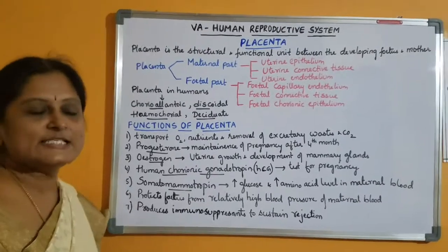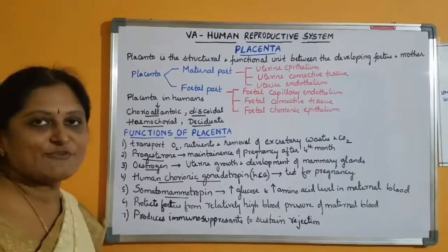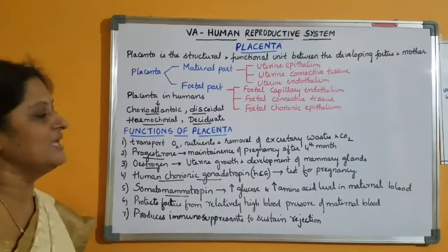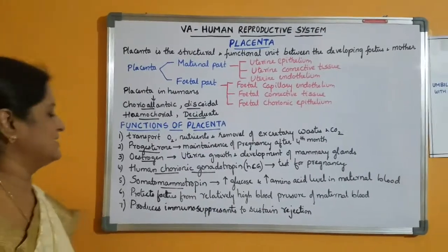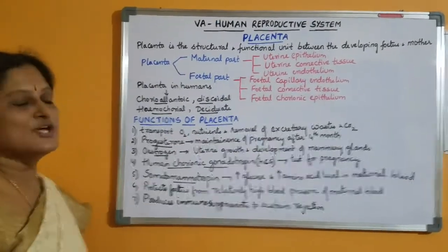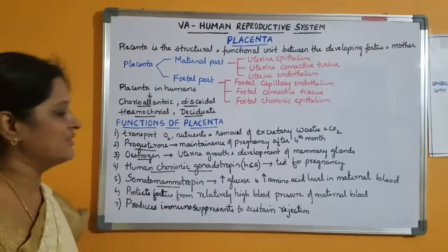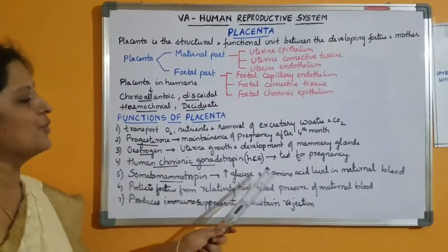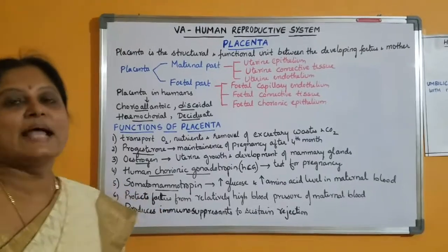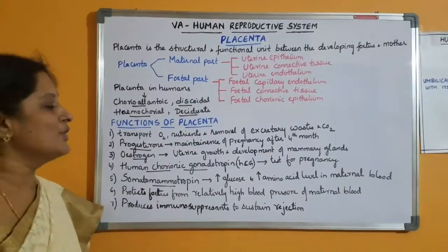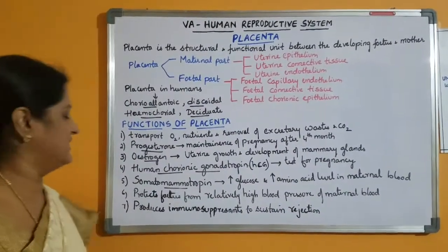HCG is excreted through the maternal urine, and the presence of HCG in the maternal urine is used as a test to detect pregnancy. The placenta also produces somatomammotropin, which has an anti-insulin effect and increases the glucose and amino acid level in the maternal blood, thus facilitating more usage of glucose and amino acids by the fetus.